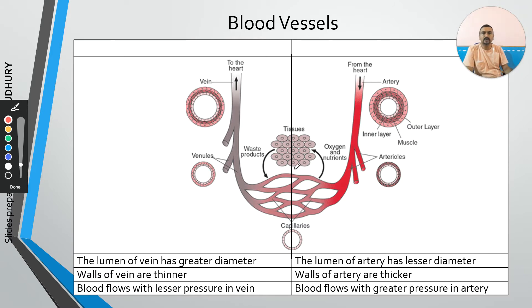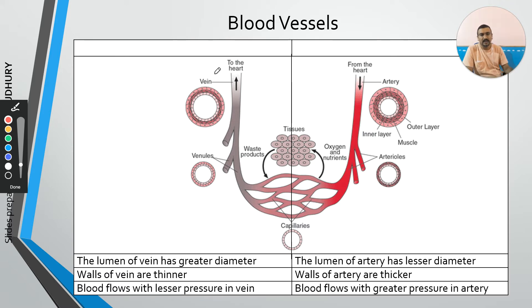Two related terms: when a vein divides or branches out, it forms venules. When an artery branches out, it forms arterioles.